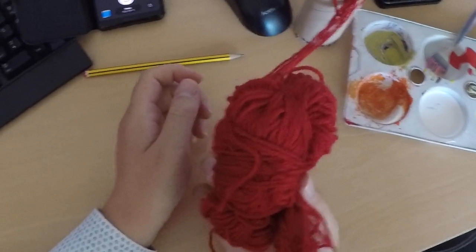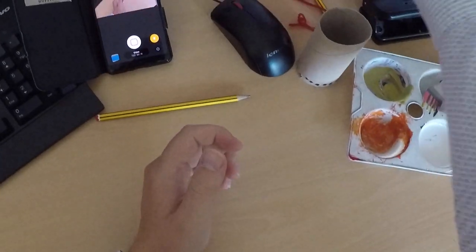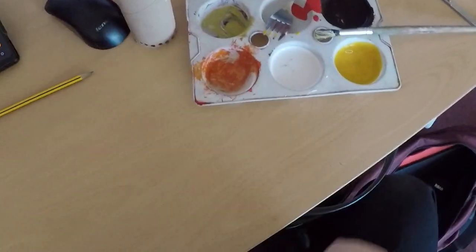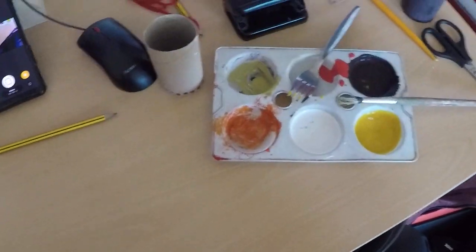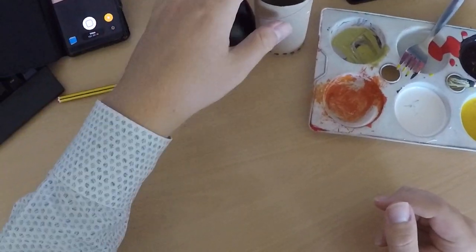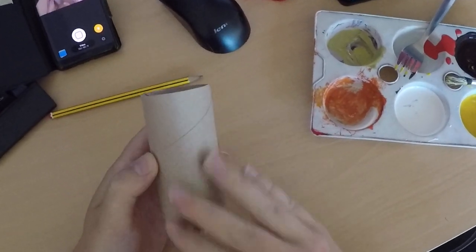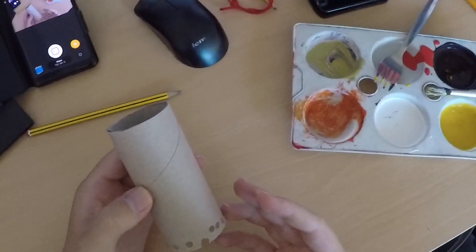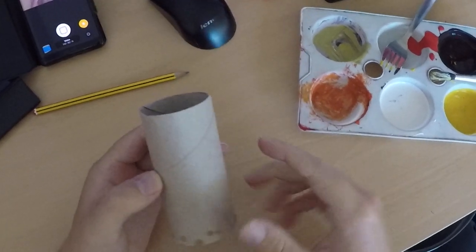Again some paints here. So what we can do, we're going to paint first of all our toilet roll tube the color we want. You might do different colors on it, but these are going to be our octopus bodies.